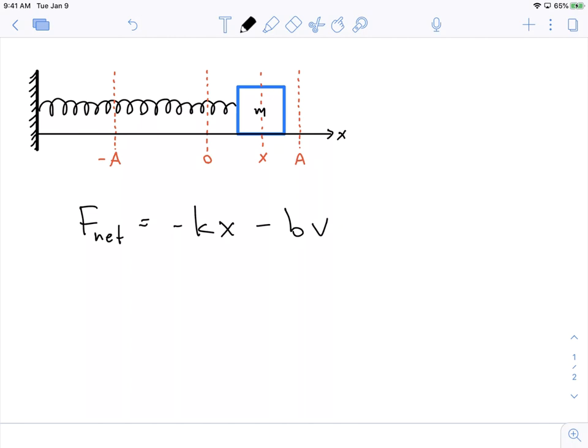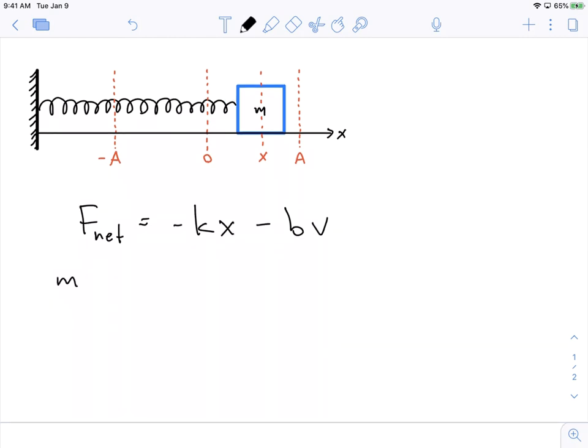And with this, we can get a big differential equation. So if I write this, I can write m. What is F_net equal to? Well, it's equal to the acceleration, which is d²x/dt², the second derivative of the position. It's equal to -kx. And this is minus b. And what's the velocity equal to? Well, it's equal to dx/dt. And so this is a big differential equation that you can solve.